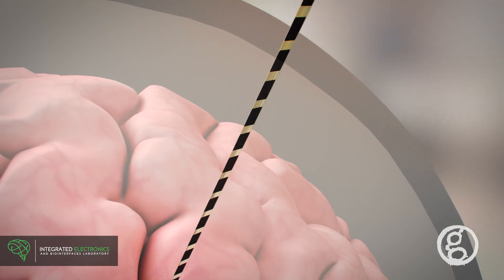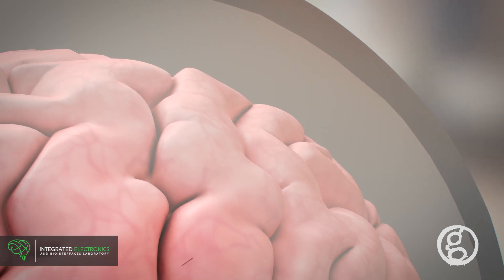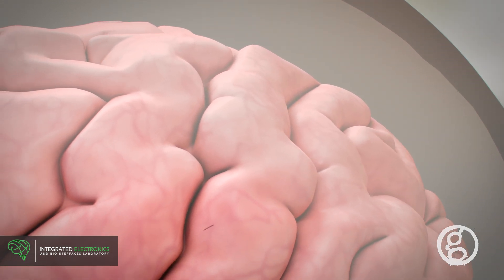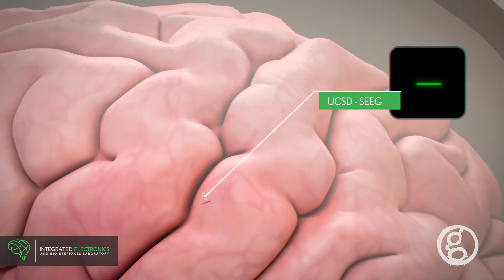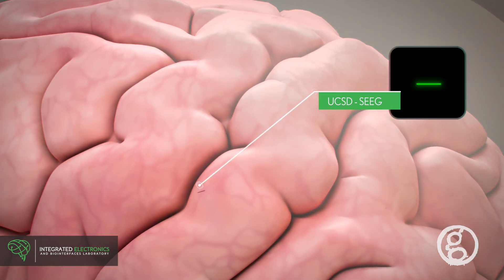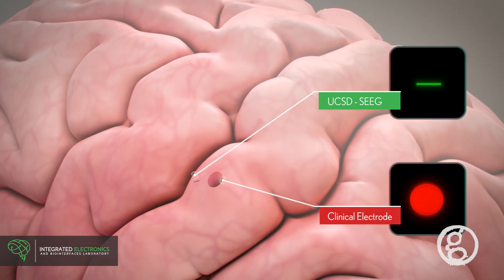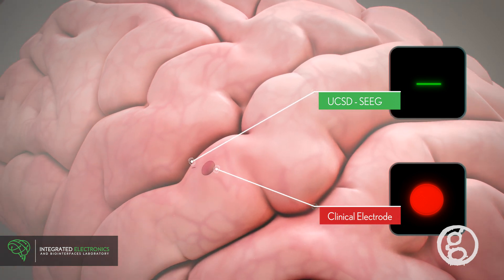When recording and stimulation are complete, it can be easily removed perfectly intact due to its robust material properties. And because the UCSD Micro-SEEG is very thin, the incision it makes in the brain tissue is much smaller than the incision made by current clinical electrodes.